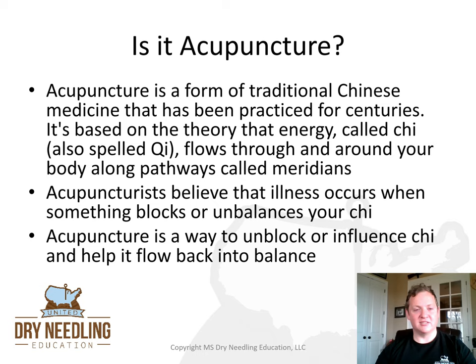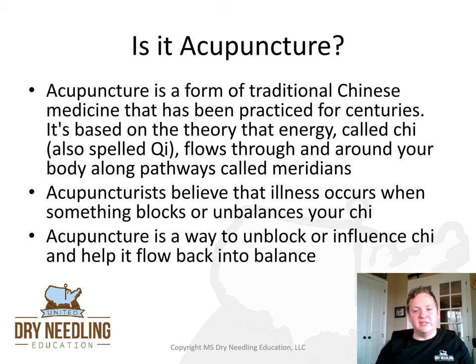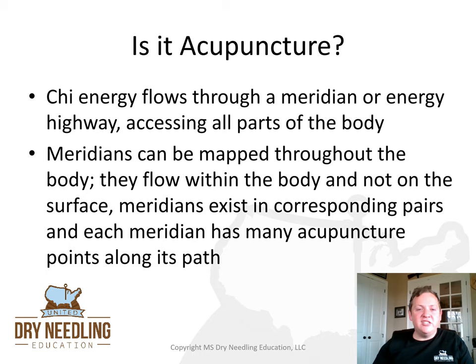Let's talk about the similarities and differences. Acupuncture is a form of traditional Chinese medicine, practiced for centuries. It's based on the theory that energy called qi flows through and around your body along pathways called meridians. Acupuncturists believe that illness occurs when something blocks or unbalances your qi, and acupuncture is a way to unblock or influence qi and help it flow back into balance. These meridians can be mapped throughout the body — they flow within the body, not on the surface, and exist in corresponding pairs, with many acupuncture points along each path.